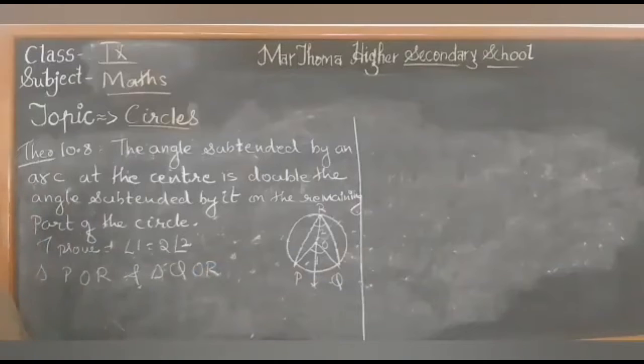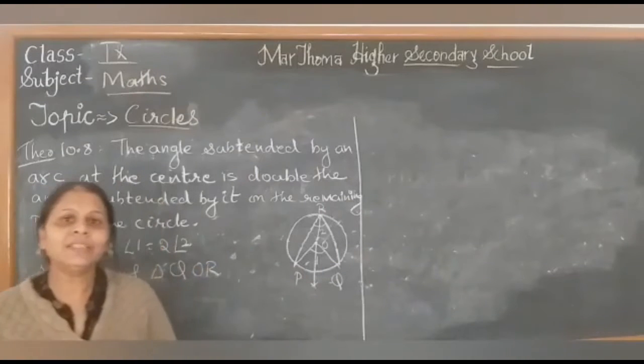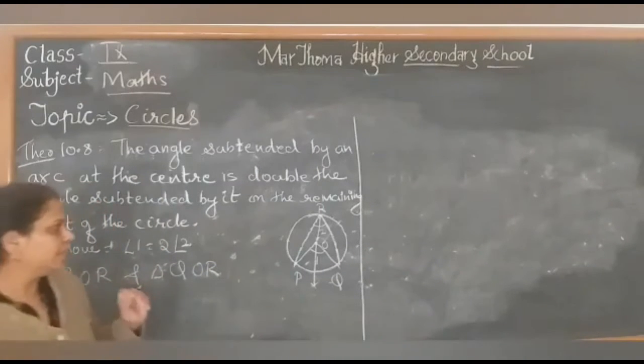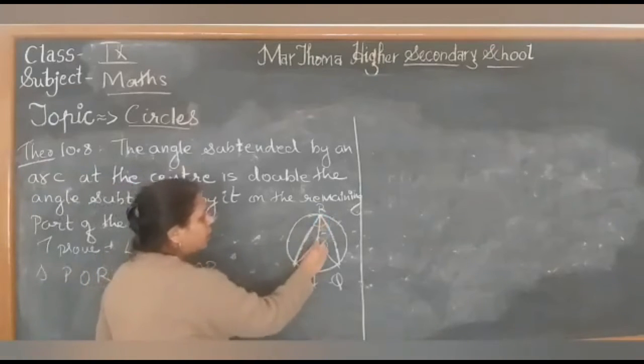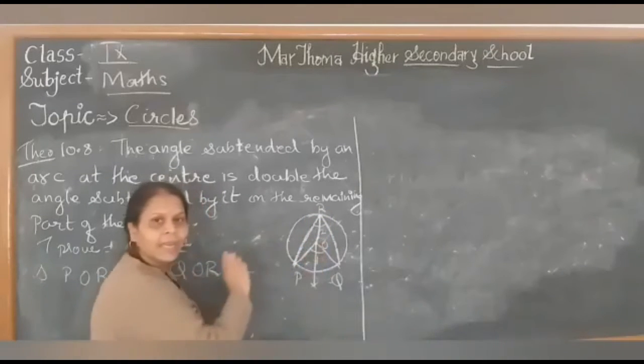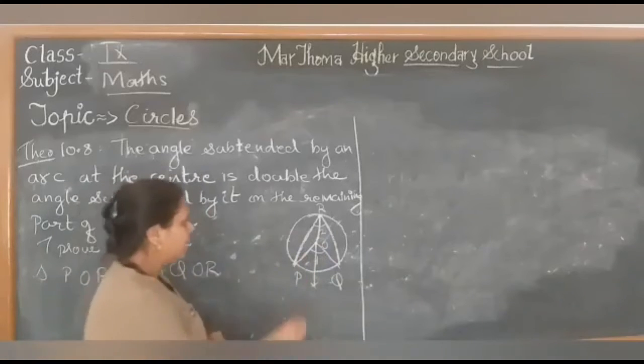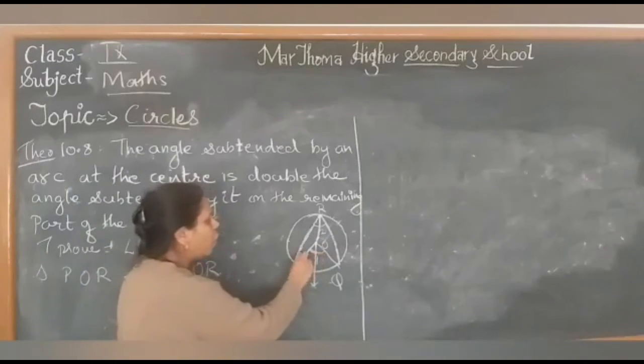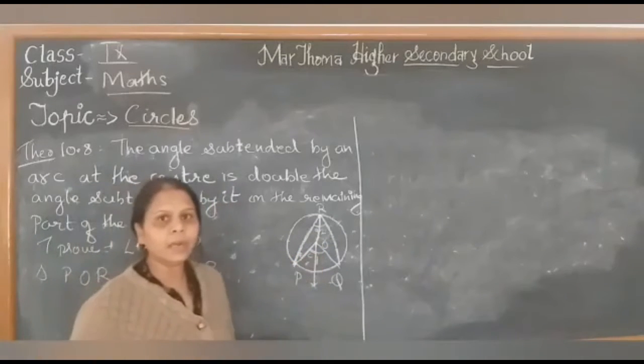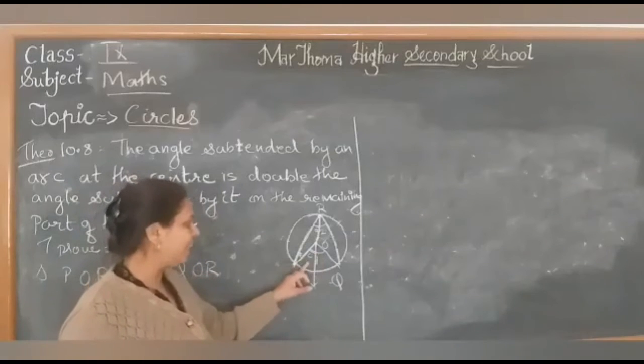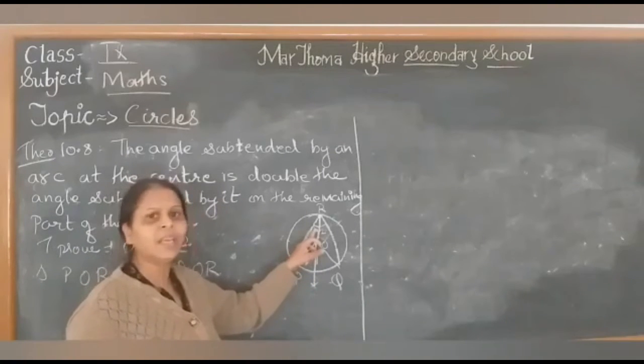Now you know the exterior angle theorem. When considering triangle POR, if side OR is extended, the angle formed on the exterior part is the sum of interior opposite angles. If this is angle A, this is angle B, and this is angle C, then by the exterior angle property, angle C equals the sum of angles A and B.